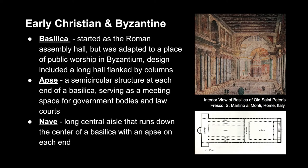Looking at early Christian and Byzantine architecture, we start with the Basilica. It started as the Roman assembly hall but was adapted to a place of public worship in Byzantium. It was designed to include a long hall flanked by columns. The apse — a semicircular structure at each end of the Basilica — served as a meeting space for government bodies and law courts. The long central aisle running down the center of the Basilica, with an apse on each end, was called the nave.